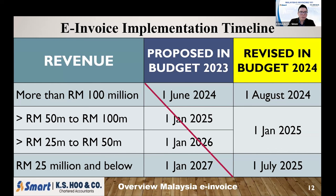When is e-invoice coming in? Referring to Budget 2023, the government announced they want to implement e-invoice, with implementation dates following phases one, two, three, and four based on your total annual sales turnover. Previously the implementation dates were 1st June, 1st January 2025, 2026, and 2027.